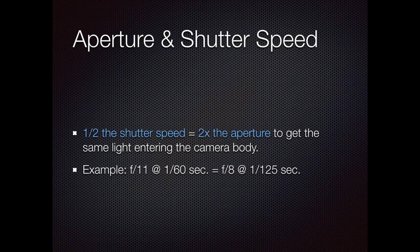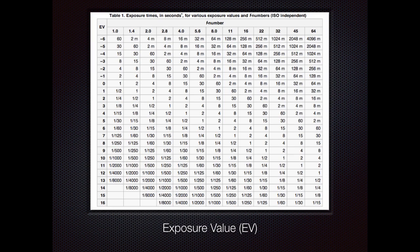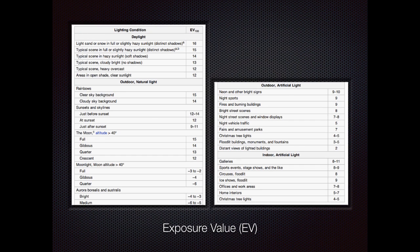Aperture and shutter speed are the two primary things. Aperture is the amount of light coming through the lens, and shutter speed is the length of time it's going through the lens. They have an inverse relationship — if you want the exact same exposure, half the shutter speed should mean two times the aperture. So an f-stop of 11 at 1/60th of a second would be equivalent to an f-stop of 8 at 1/25th of a second. This exposure value table shows the correct settings for a particular type of shooting.